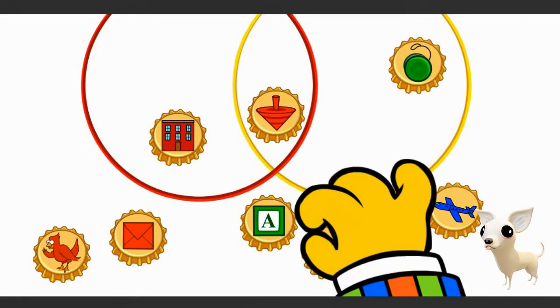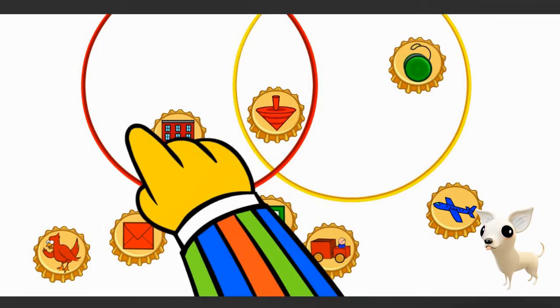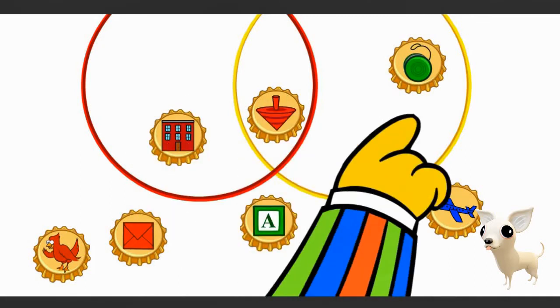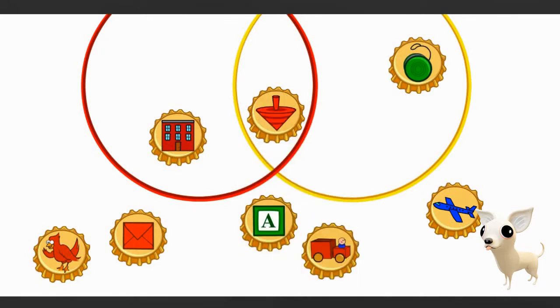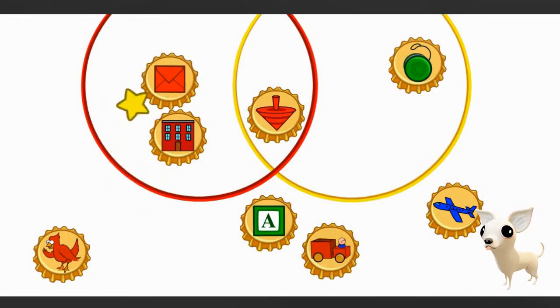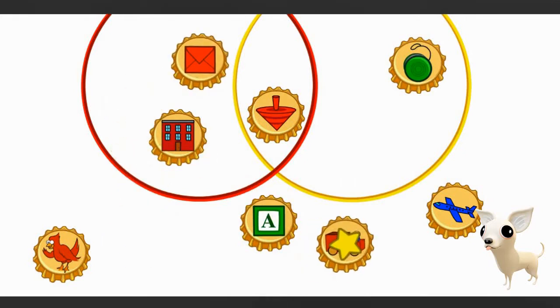Let's find a good way to sort the bottle caps. Let's put red things here, and the toys here, and red toys here. Okay, so this is a sorting game. I will need to place the bottle caps inside the circles. Now according to Burt's instruction, I will need to place the red bottle caps in the left hoop, the toys in the yellow hoop, and anything that is a red toy in the middle. Let me go ahead and start.